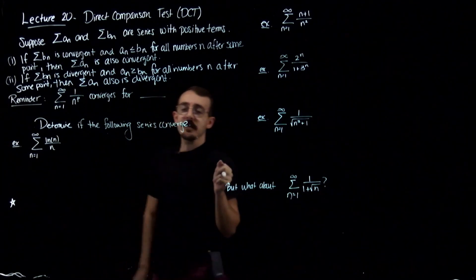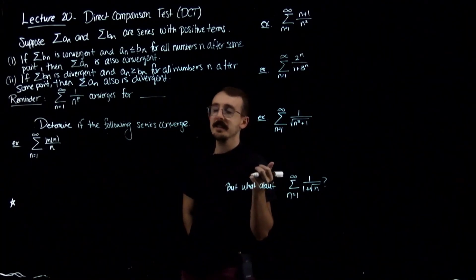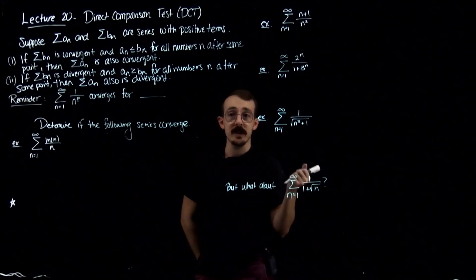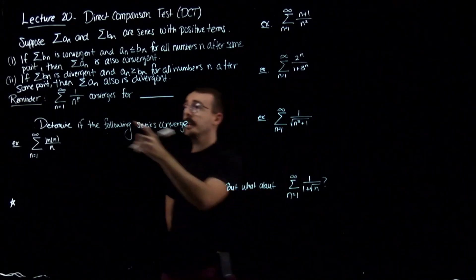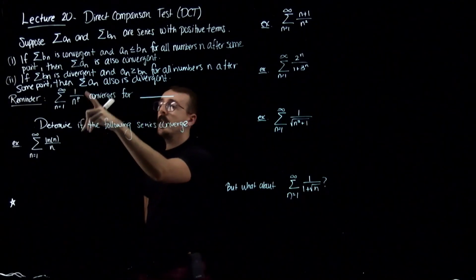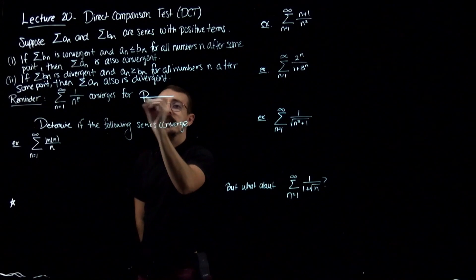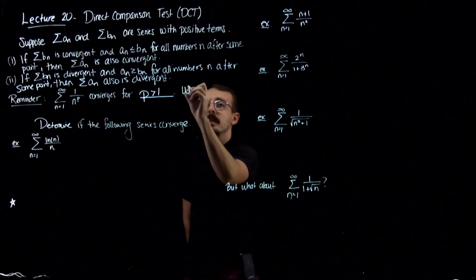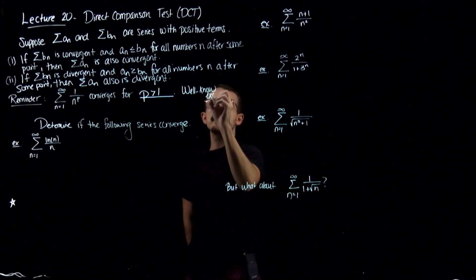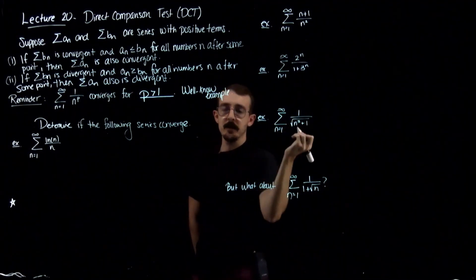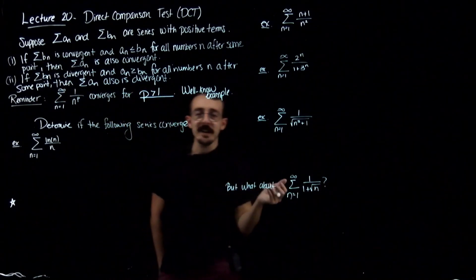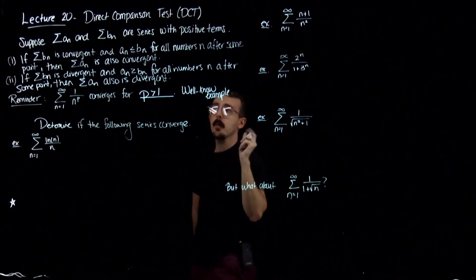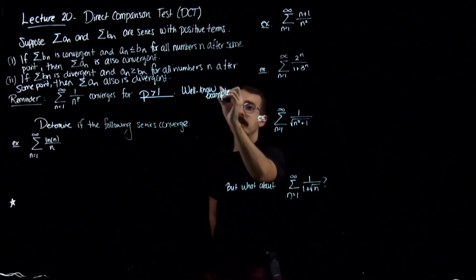One very important thing you need for the Direct Comparison Test and the Limit Comparison Test is a reference — some series that you already know converge or diverge. The most important example is 1/n^p, which converges when p is strictly greater than one. For these tests, you need a b_n ready that you know converges or diverges so you can compare it to the new series.